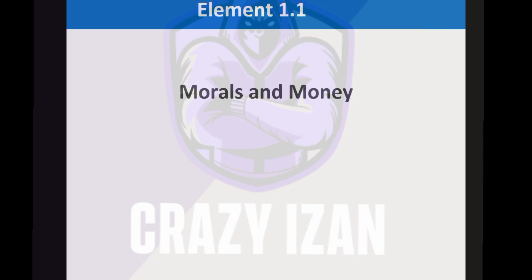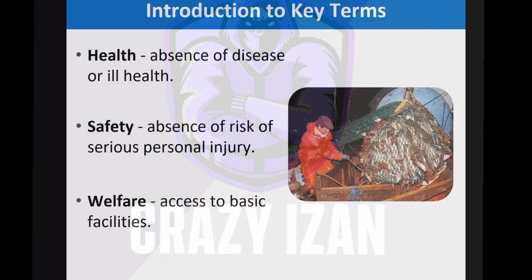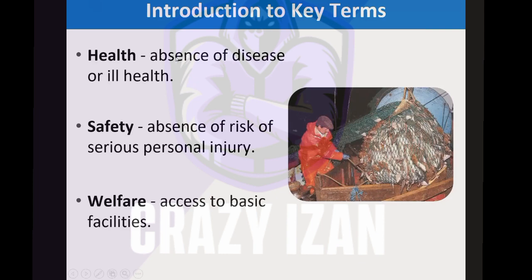Before discussing moral and financial reasons, we need to understand some key terminology. First, health is the absence of disease or ill health. If you are free from sickness and disease, you are healthy. Occupational health refers to health hazards in the workplace — things that can cause diseases or sicknesses, such as biological agents. Safety means absence of risk of personal injury. If you are at risk of a broken bone, a cut finger, or laceration, you are unsafe. Health deals with illness and diseases; safety deals with personal injury.